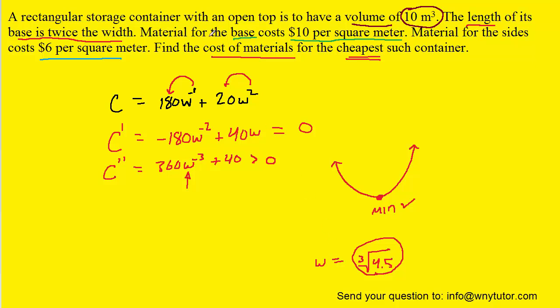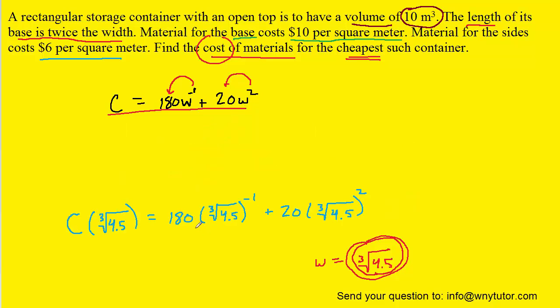Now it didn't ask us to find the value of w. It actually wants the cost. So our next and last challenge is to plug this value of w into our cost function. So here we have it plugged in for w into the cost function. And when you compute that on your calculator, you should get approximately $163.54. So that would be the approximate minimum cost of the storage container.